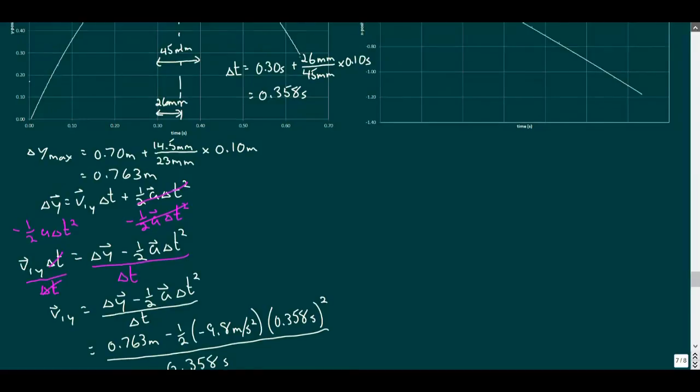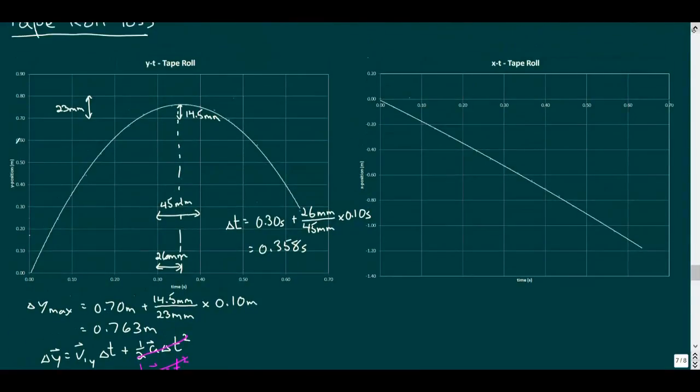But we can't forget our uniform horizontal velocity. For this, we'll find the time of 0.358 seconds on our position time graph for the x direction. Since the horizontal grid spacing here is also 45 millimeters, we'll need a time location that's 26 millimeters past the 0.3 second grid line. At this point, our trend line is 5.5 millimeters below the negative 0.6 meter grid line.